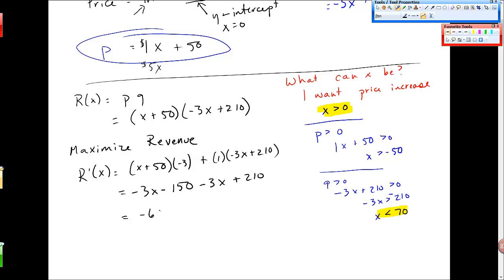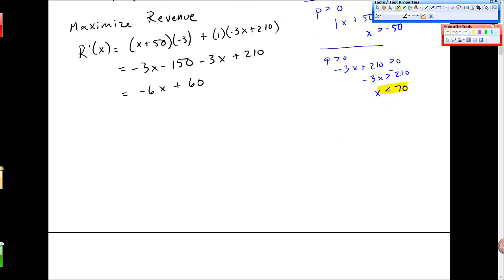And then when I solve for critical values, so let me put this, I'm going to erase that, and then I'm going to put a little comment in here. I want to find critical values, and I set r prime is defined everywhere, but r prime can be 0, negative 6x plus 60 equals 0. And I get x is 10. Okay?